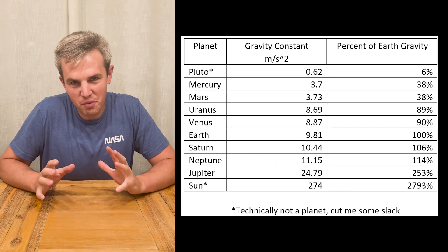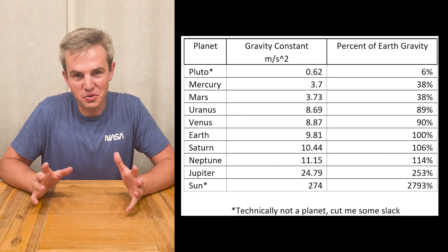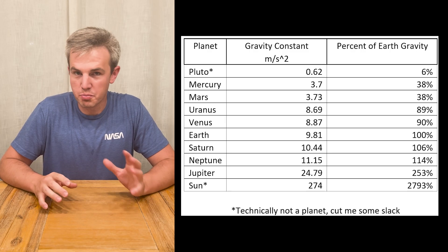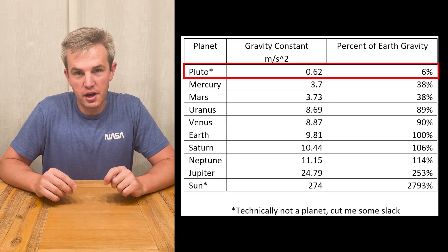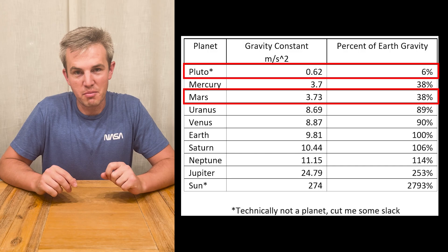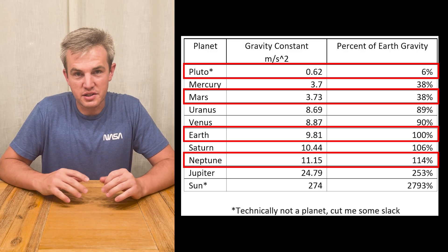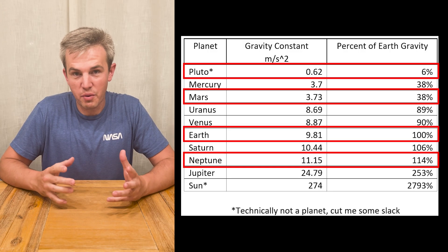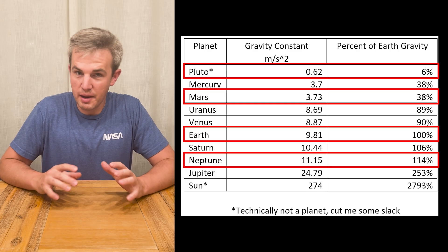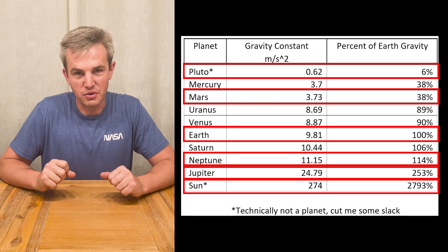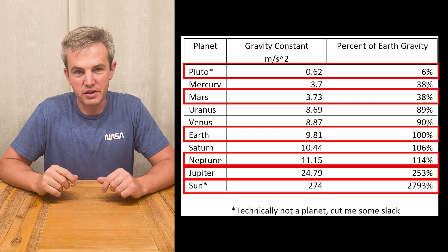For my demo, I didn't want to replicate the gravity of every single planet, even though it's only changing a number in the code. But I tried to choose a representative set. So I chose Pluto as a low-gravity example. I chose Mars, because we hear a lot about Mars. I chose Earth as a good comparison. Neptune as a slightly heavier, more-gravity example. And then Jupiter, and then the Sun as the examples that I'd use, although we could easily simulate the gravity for any of these planets.